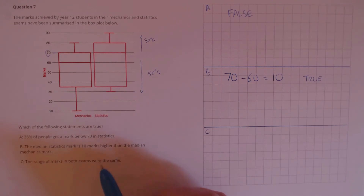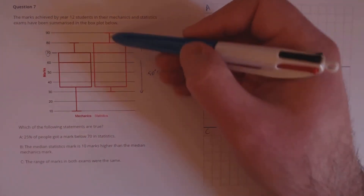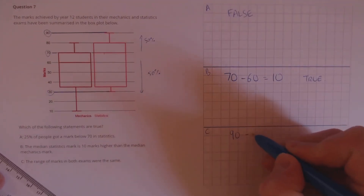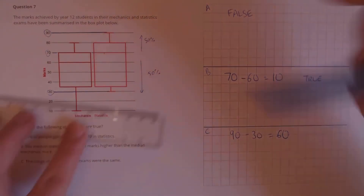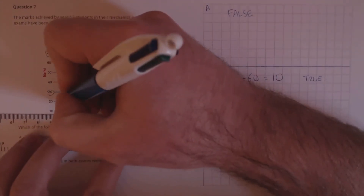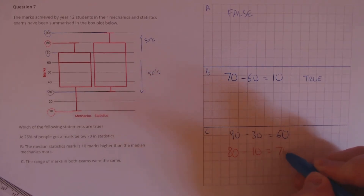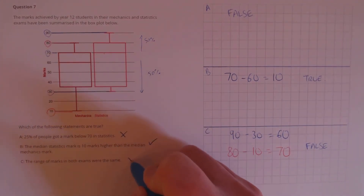C: the range of marks in both exams were the same. To find the range we take away the smallest value from the largest. For statistics that is 90 take away 30, so 90 minus 30 is 60. And for mechanics we have 80 take away 10, which equals 70. These two are clearly not the same, so that claim is false. Finally, we have false, true and false.